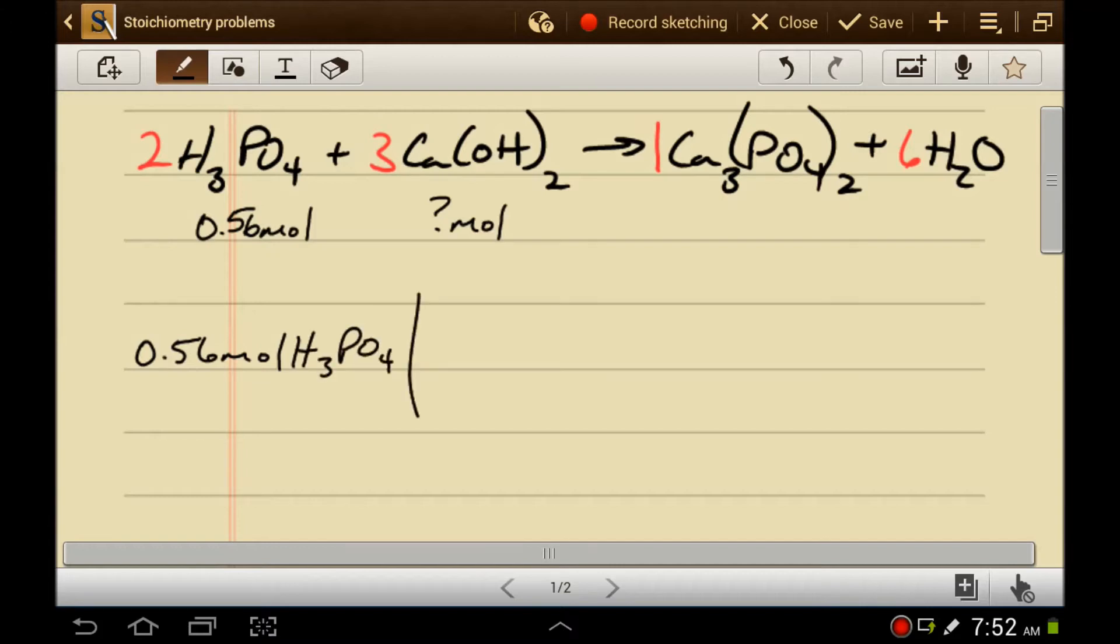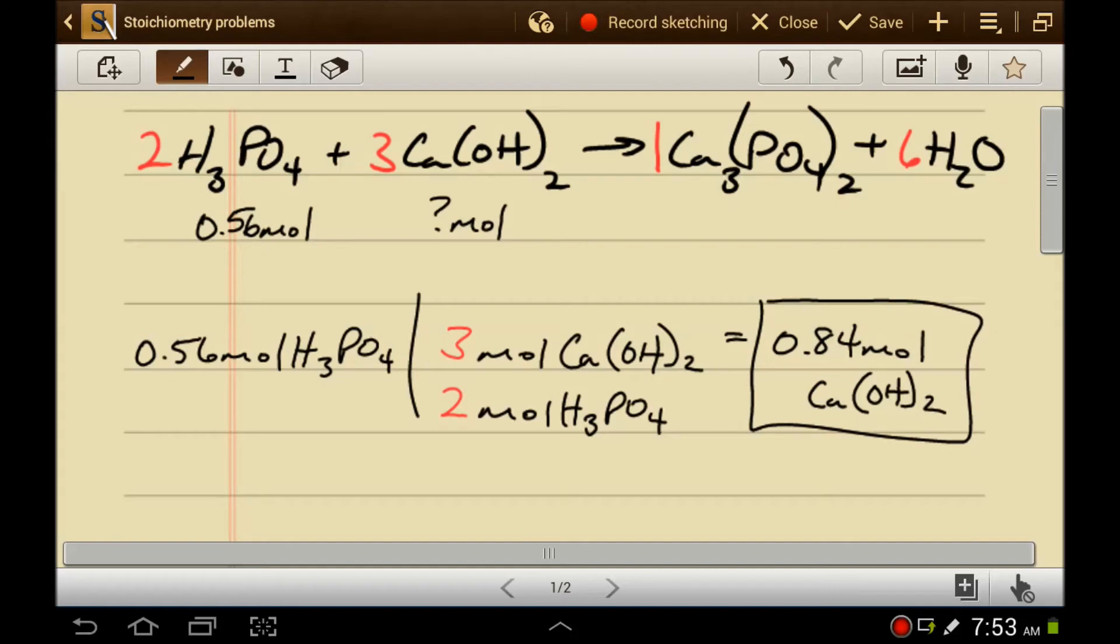and then remember that when you're doing dimensional analysis, what you want to cancel goes on the bottom. So moles of H3PO4 go on the bottom, and then what you want goes on top, so moles of calcium hydroxide goes on top. And the ratio of calcium hydroxide to phosphoric acid is 3 to 2. So 0.56 times 3 divided by 2 is 0.84 moles of calcium hydroxide. So 0.84 moles of calcium hydroxide is equivalent to 0.56 moles of phosphoric acid.